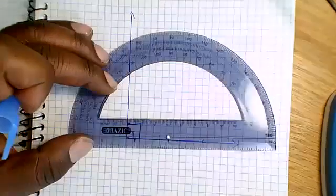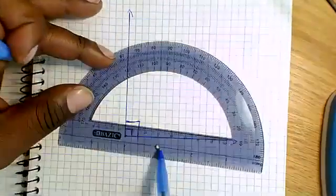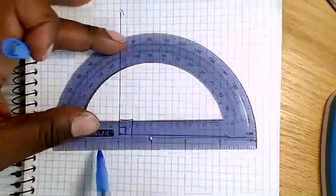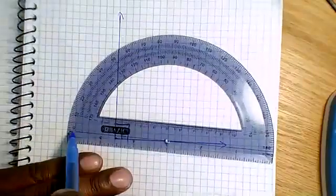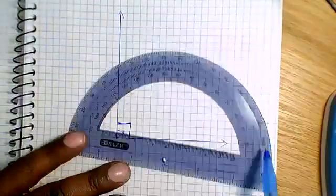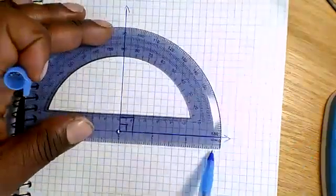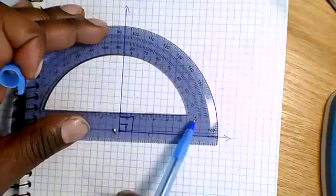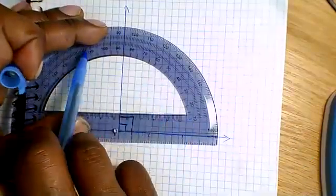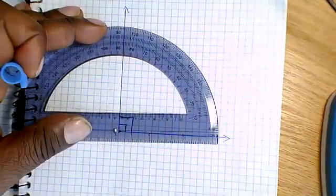Right here you see from this vertex you follow that line—that's zero—and it goes all the way to 180. The same thing on this side: you don't see the zero on this side, but you do see the 180, and it goes 10, 20, and they count them on the inside.